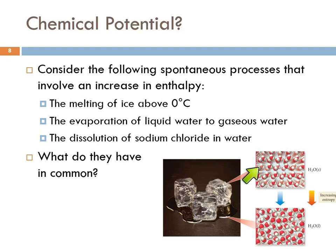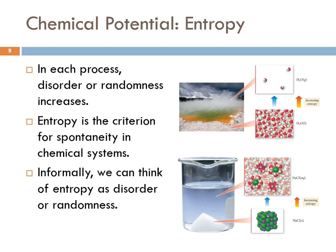Increasing entropy. Here we've got solid water and all the water molecules are arranged in an open crystalline pattern. As it melts, what happens to the order of the water? It gets disordered. Let's look at water evaporating: here we have all of the water molecules in a small volume, very close together. As it evaporates, they spread out and get even more disordered. And for sodium chloride dissolving, here we have a lovely crystalline structure alternating sodium and chloride ions — very ordered. When it dissolves, the ions are free to move about in the water and become more disordered. In each of these three processes, disorder or randomness increases.